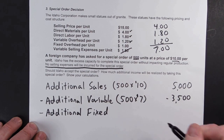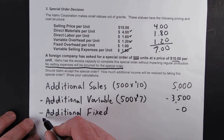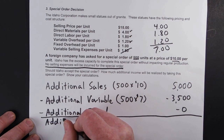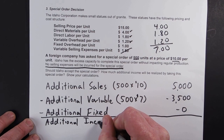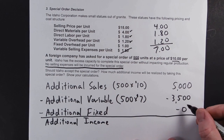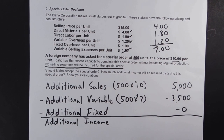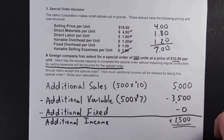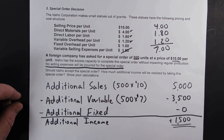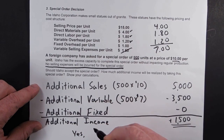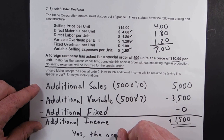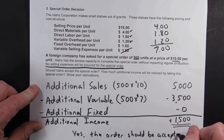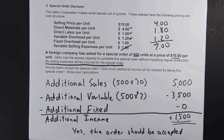Our additional fixed costs: the problem doesn't tell us about any additional fixed costs, so we assume they didn't go up — fixed costs generally do not change. So we're going to get additional income of $1,500 if we take this special order. We want to accept the special order — yes — because we would be $1,500 better off by accepting it.